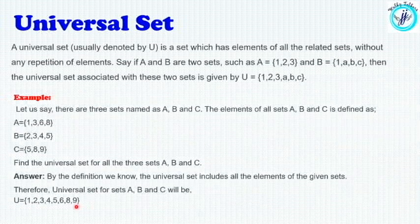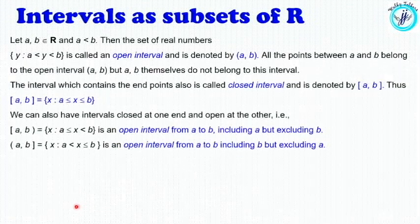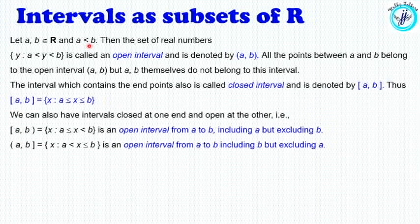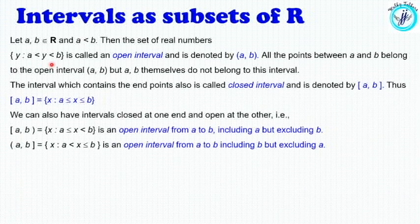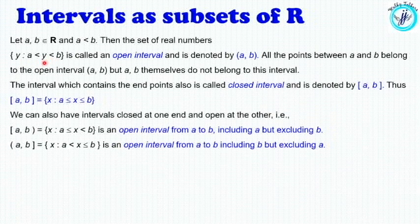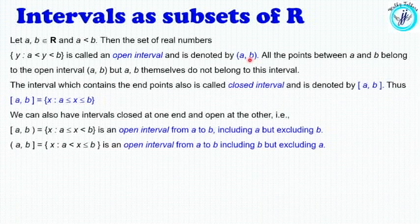Now we discuss intervals. Let A and B be elements of R, with B larger than A. The set of real numbers Y such that A is smaller than Y and Y is smaller than B is called an open interval, denoted by curved brackets (A, B). The endpoints A and B do not belong to this open interval.